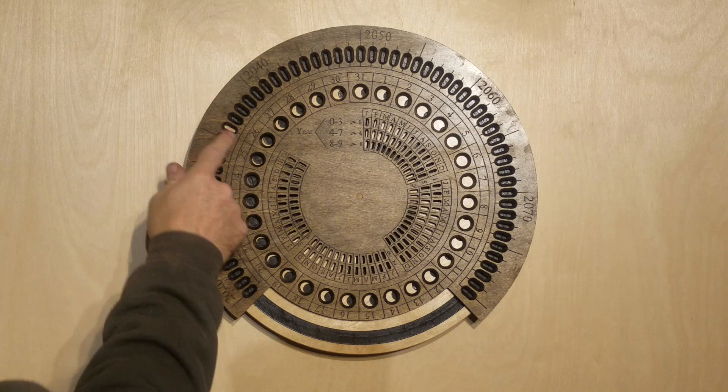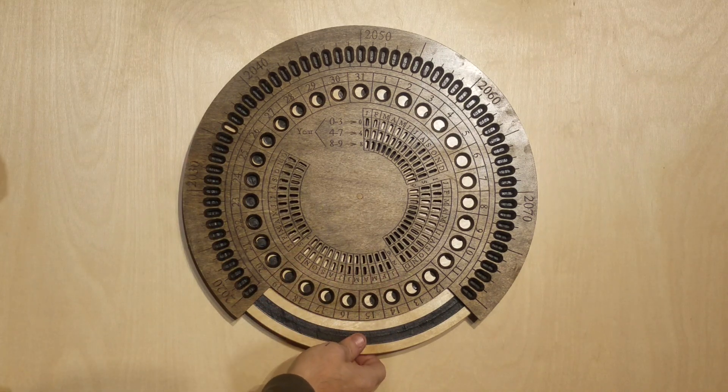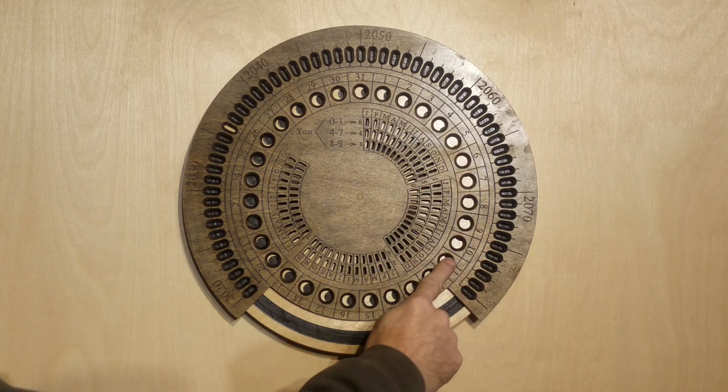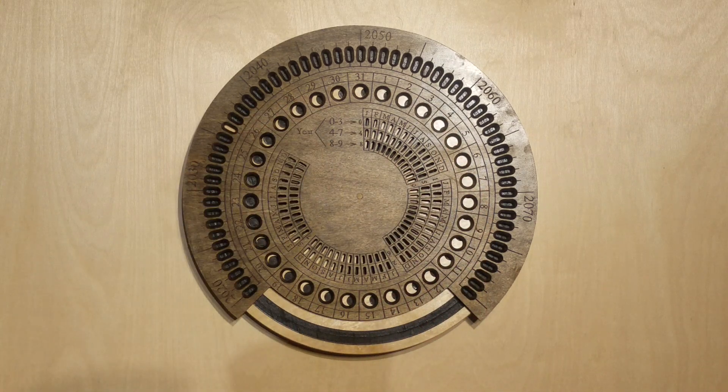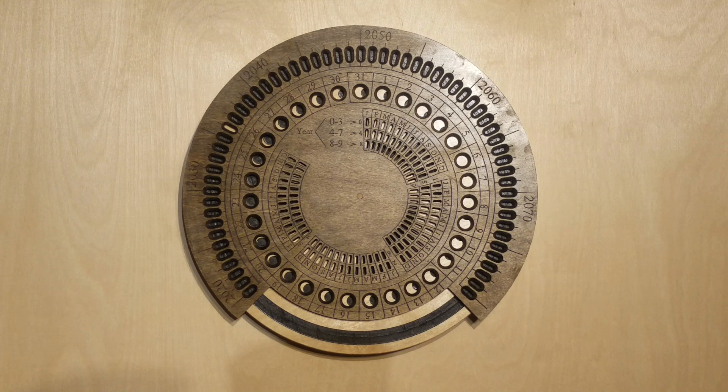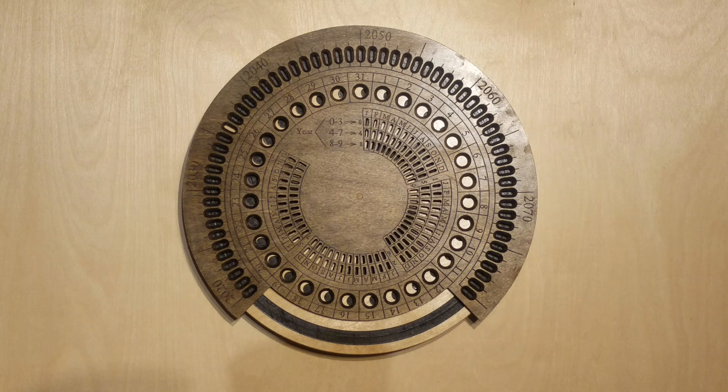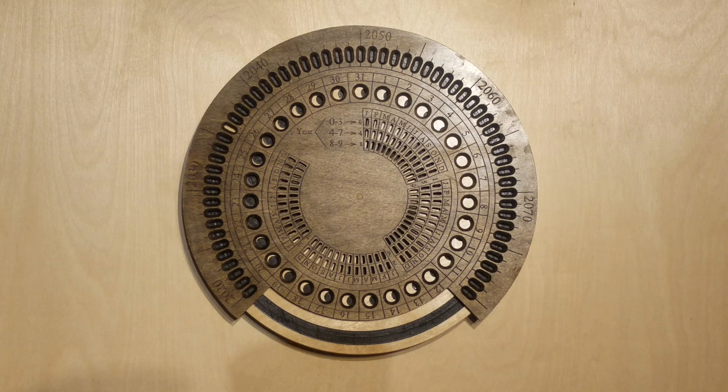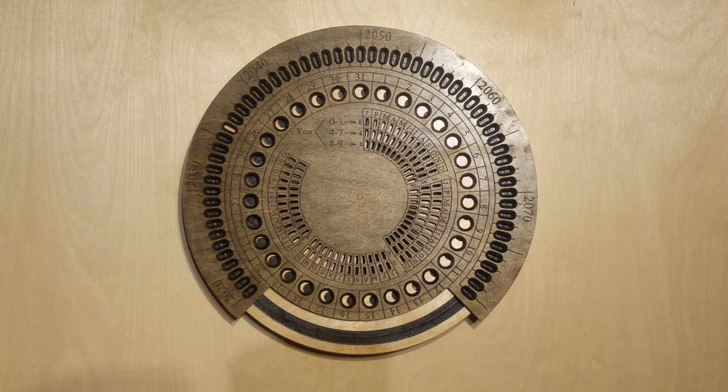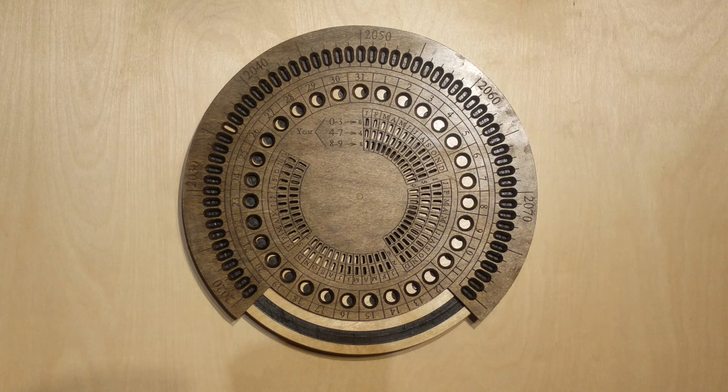So once you dial in your year and center it on your month, which is labeled here, this dial shows you the phases of the moon for each day of that month. And leap years and things like different days of the month are all accounted for. So if there's less than 31 days in the month, you can just ignore the remainders, and then the next window over here shifts to accommodate the right spot.